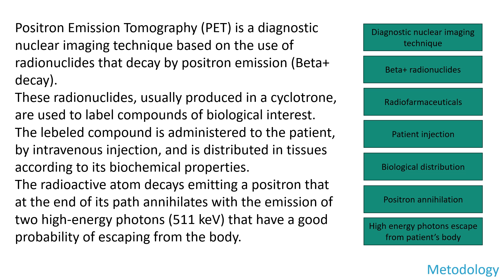Positron emission tomography is a diagnostic nuclear imaging technique based on the use of radionuclides that decay by positron emission through a beta-plus decay. These radionuclides, usually produced in a cyclotron, are used to label compounds of biological interest. The labeled compound is administered to the patient, usually by intravenous injection, and is distributed in tissues according to its biochemical properties. The radioactive atom decays emitting a positron that at the end of its path annihilates with the emission of two high-energy photons that have a good probability of escaping from the body.